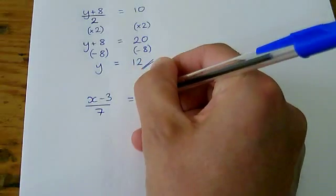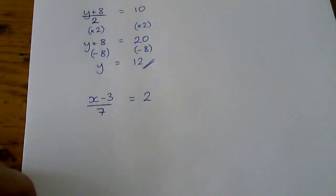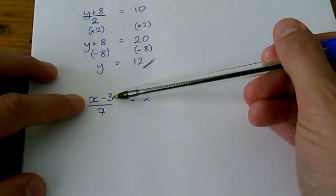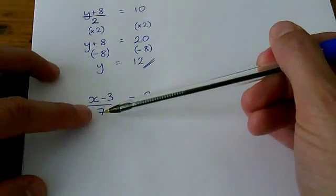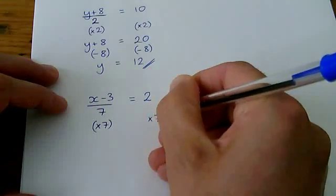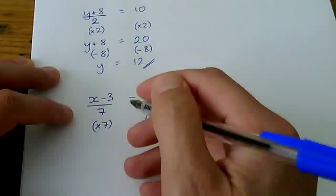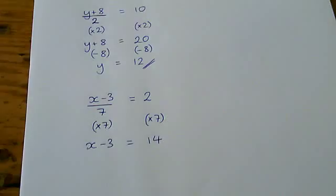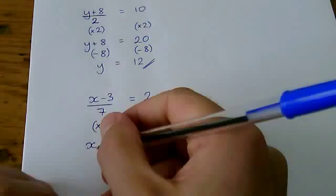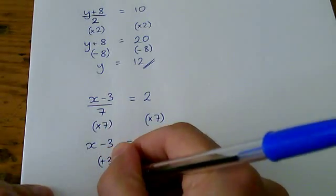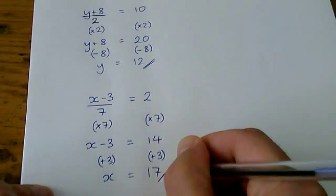One last one before we crank it up again and get a bit more difficult. We have got x minus 3 over 7 equals 2. Again, you have to read the order in which these operations have been done. The minus 3, take away 3, happened first and then divide by 7. So to undo those steps, you need to times by 7 and that will get rid of the division, the fraction bit. And then here, 2 times 7, 14. And here we can see, now we can get rid of that minus 3 by adding 3 and you'll have x equals 17 as your answer.